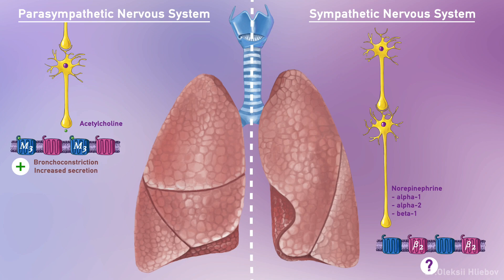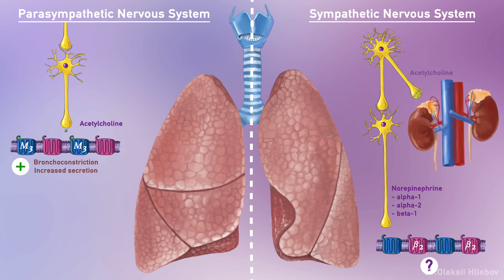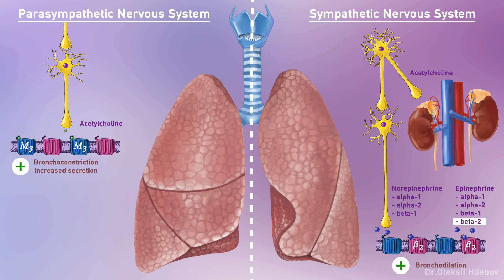Activation of the sympathetic nervous system causes bronchodilation because preganglionic sympathetic fibers that innervate the adrenal medulla release acetylcholine. Acetylcholine interacts with the nerve subtype of nicotinic receptors in the adrenal medulla. As a result, the adrenal medulla releases epinephrine and norepinephrine in a proportion of 80 to 20 — 80% epinephrine and 20% norepinephrine. Released epinephrine travels to the lungs and causes bronchodilation, because epinephrine acts on beta-2 receptors.